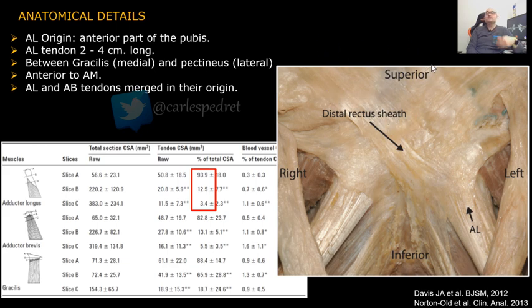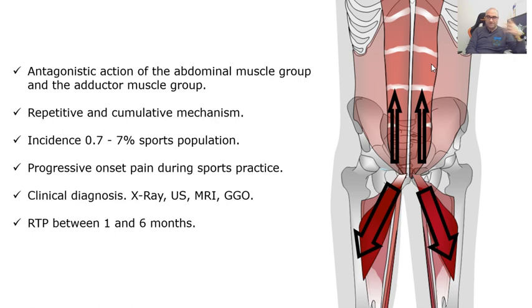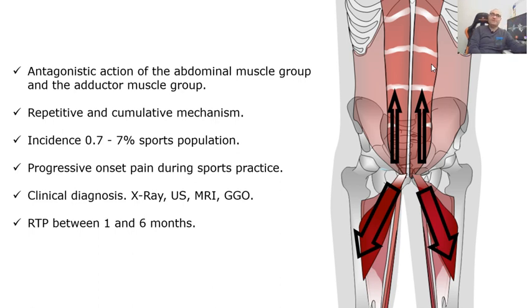This is not all about a fight between the abdominal group and the adductor group — it's much more complex than that. We have to know there is a disbalance between many muscle groups attached in the pubic and pelvic region. The injury mechanism is repetitive and cumulative overload, especially in soccer when you are kicking, sprinting, and changing directions. It's an overuse pathology and the incidence is roughly 0.7 to 7 percent in the sports population, depending on the sport and the individual characteristics of the athlete.